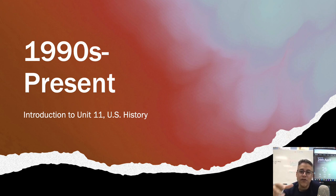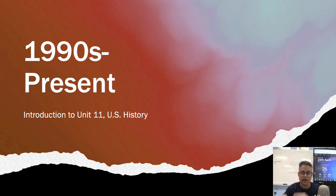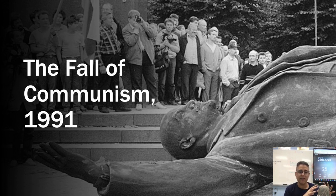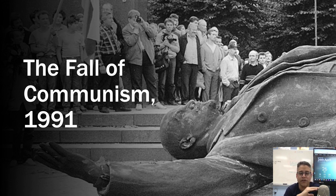Unit 11 starts with the role of the U.S. becoming more complex, especially in the world. As we get into the 1990s, communism fails in the Soviet Union. This comes with the symbolic end of the Soviet Union in 1989 when the Berlin Wall falls, but more concretely with the fall of communism in 1991 when a bunch of the Soviet republics collapse. This image represents the collapse of the Soviet Union in 1991.